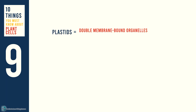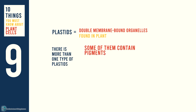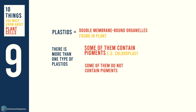Plastids are double membrane-bound organelles found in plant cells, but there is more than one type of plastid. Some of them contain pigments — for example, the most well-known plastid of all, the chloroplast. And some of them do not contain pigments — for example, the starch-storing plastid, the amyloplast.